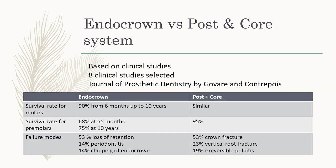Comparing endocrowns to the post and core system based on eight clinical studies from the Journal of Prosthetic Dentistry, Goeber found that the survival rate for molars with endocrowns was 90% from six months up to 10 years — similarly for post and core. For premolars, the endocrown survival rate was 68% at 55 months and 75% at 10 years, whereas post and core showed 95%, indicating a better prognosis for post and core in premolars.